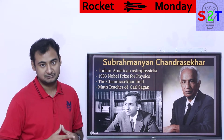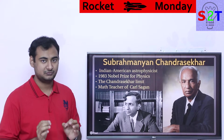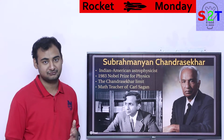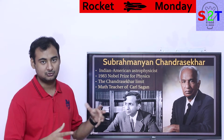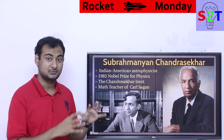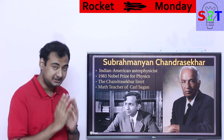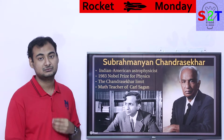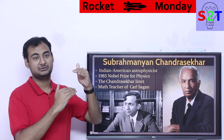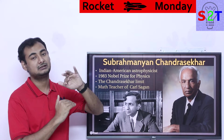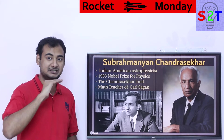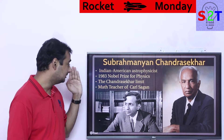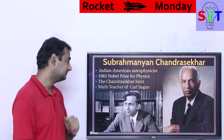He was very instrumental in understanding stellar evolution — what happens to a star at the end of its life. Basically white dwarfs, neutron stars, black holes — high energy events. He was key in figuring out what is the barrier between becoming a white dwarf, neutron star, or black hole. There is a hard limit of 1.4 solar masses, and that limit is called the Chandrasekhar limit.